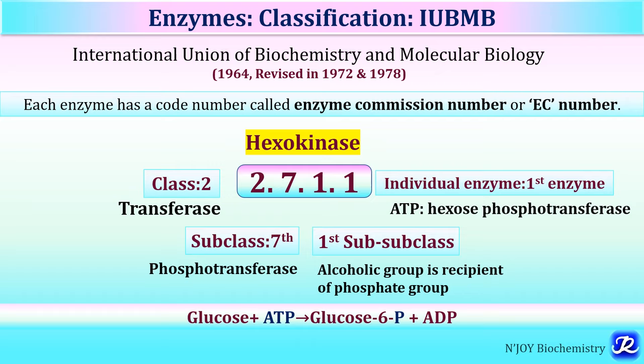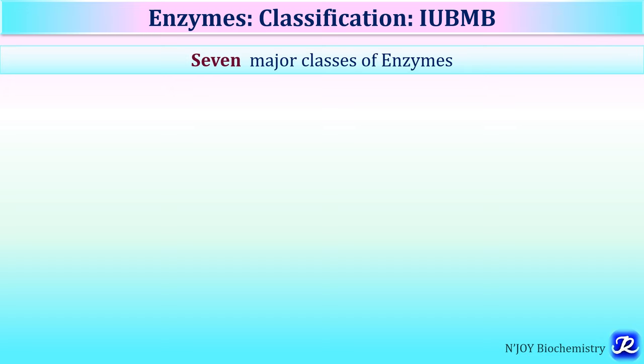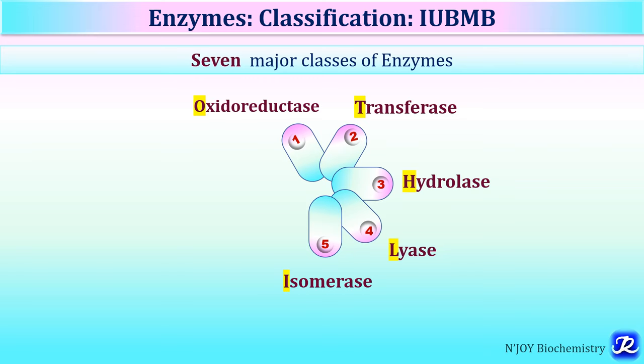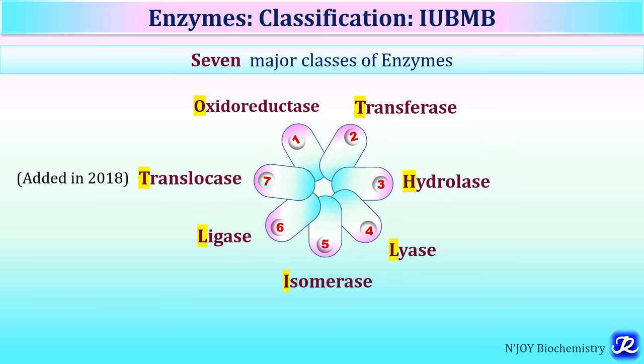According to IUBMB, enzymes are classified into 7 major classes, numbered sequentially from EC1 to EC7: EC1 oxidoreductases, EC2 transferases, EC3 hydrolases, EC4 lyases, EC5 isomerases, EC6 ligases, and EC7 translocases, which was recently introduced in 2018.